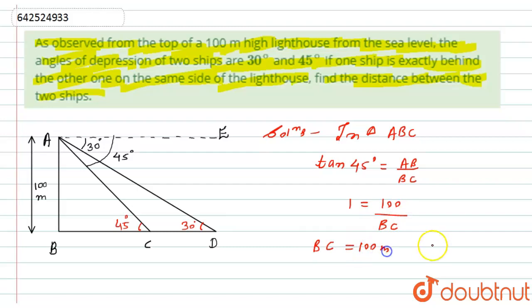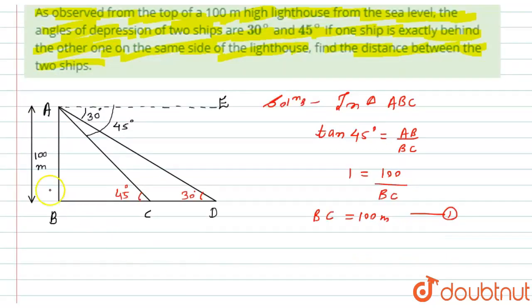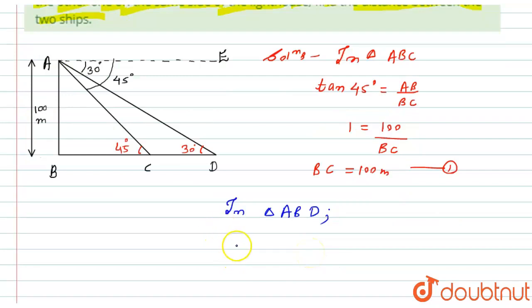Now if we look at the second triangle, in triangle ABD, what I can write is that tan 30 equals opposite over adjacent, that is AB divided by BD.